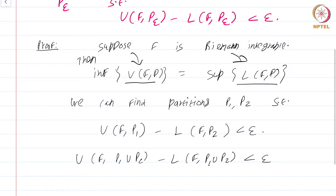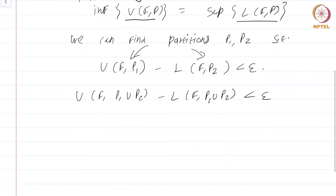Why? Because by going to the common refinement, you are only going to increase the upper sum and decrease the lower sum. Therefore the difference is only going to get lesser. So you have U(f, P1∪P2) minus L(f, P1∪P2) less than epsilon. This proves one direction.